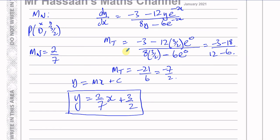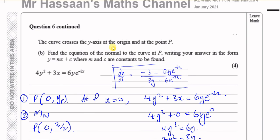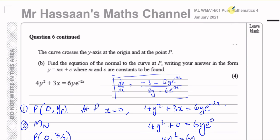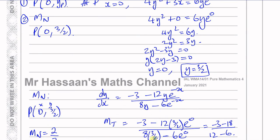To be thorough: m equals 2/7 and c equals 3/2. So there we have the answer to question 6, which is about implicit differentiation and its application. Other questions from this P4 January 2021 paper will be found in the playlist. Other questions on implicit differentiation are also in a playlist linked here. Thank you very much for watching, and I hope to see you soon.